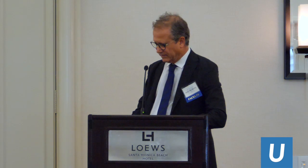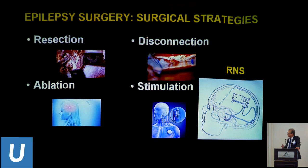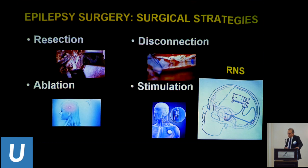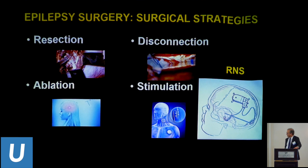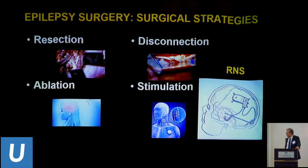We'll cover some topics in epilepsy networks. When we talk about epilepsy surgery, essentially the strategies we have are four. One is resection—the good old resection that we all know, such as temporal lobectomy. We now have ablation, which is a more refined and targeted method for essentially achieving a lesion. Then we have disconnection strategies, such as corpus callosotomy, anterior to third or complete. And finally, we have very exciting technologies already in use: stimulation.